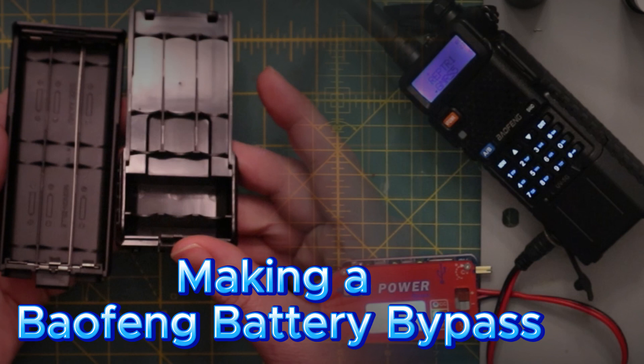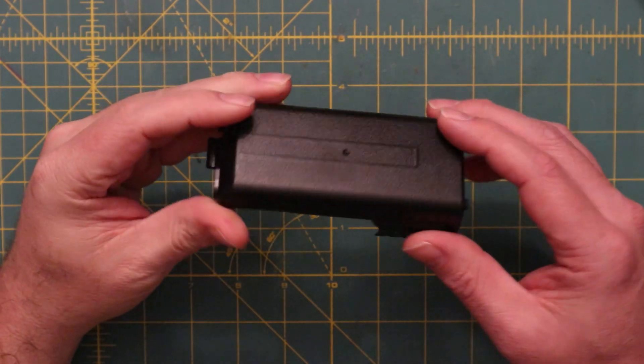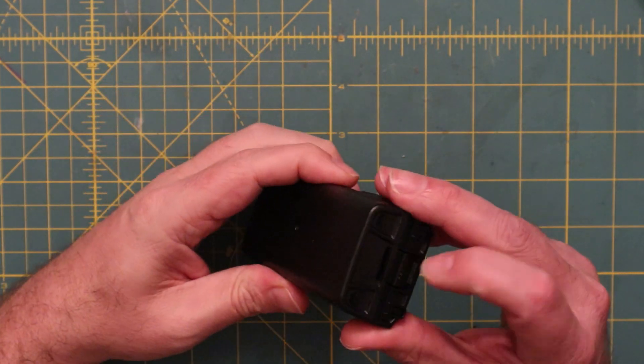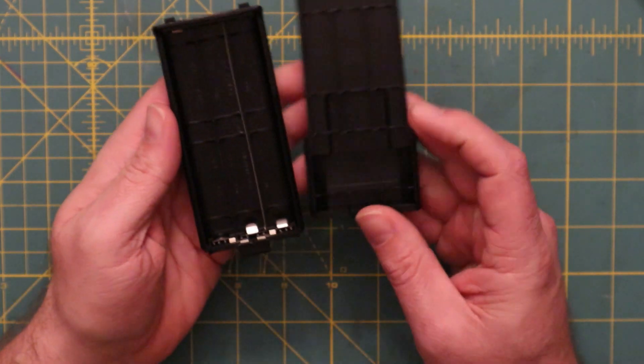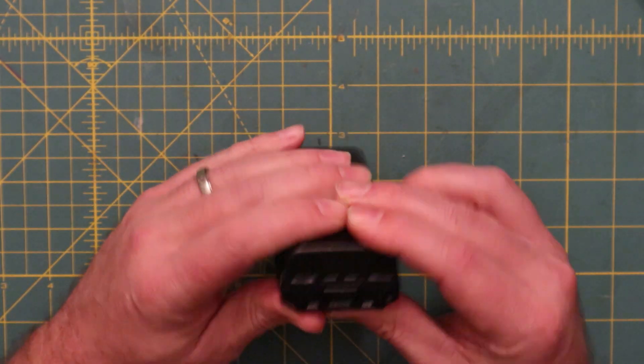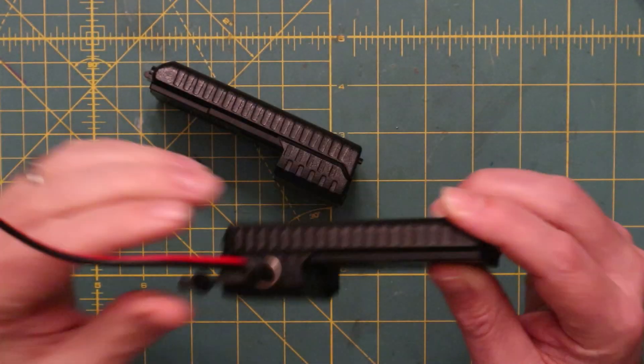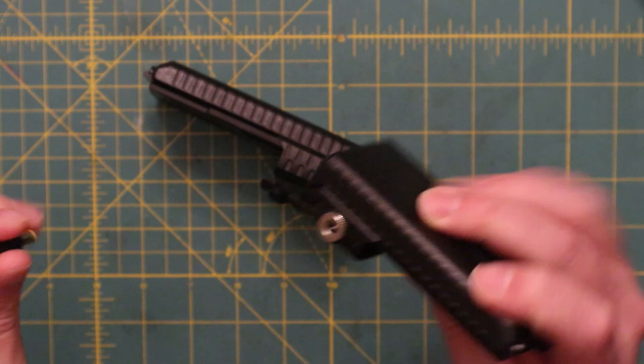A battery bypass will let us run this Baofeng handheld transceiver off a general DC source. We're going to start with a cheap off-brand AA battery Baofeng adapter and modify it for our purposes. To do this we're going to add a barrel connector and run that directly to the connectors for the battery.